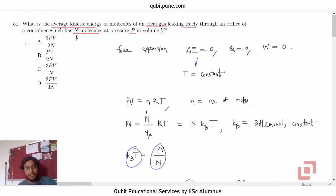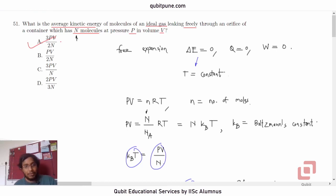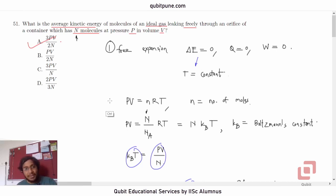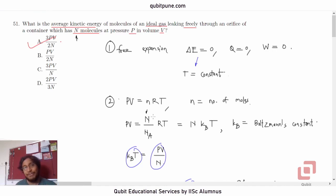This is a fairly simple question, but you have to first identify the thermodynamic process as free expansion and then apply the ideal gas equation to arrive at the expression for average kinetic energy. In our next video we will be solving question 52.